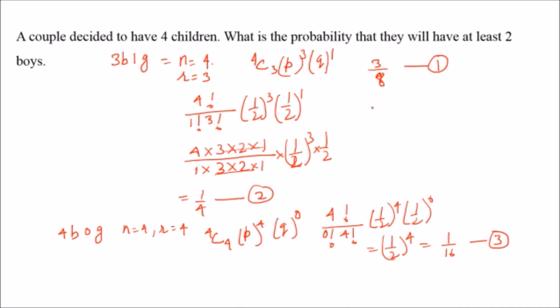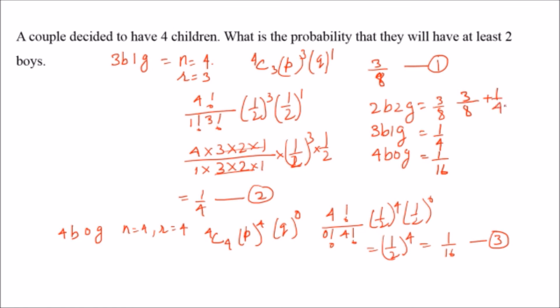The 'at least two boys' statement means we can have: two boys and two girls, or three boys and one girl, or four boys and zero girls. Since these are 'or' conditions, we add all the values: 3/8 + 1/4 + 1/16 = 11/16. So the probability of having at least two boys out of four children is 11/16. This is how we calculate the 'at least' statement — it is very easy once you have the concept. Try solving some questions on pedigree analysis and at least statements, as these are very important and generally come in section C.